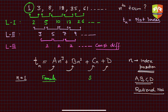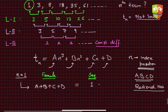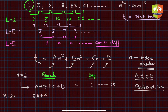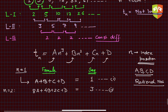Applying n = 1 to the formula gives a + b + c + d = 1. Call this equation 1. When n = 2, the formula becomes 8a + 4b + 2c + d, and from the sequence the value is 3. So 8a + 4b + 2c + d = 3. Call this equation 2.